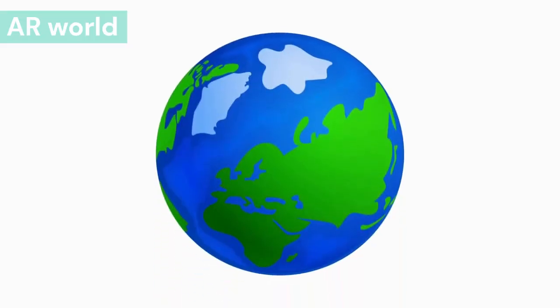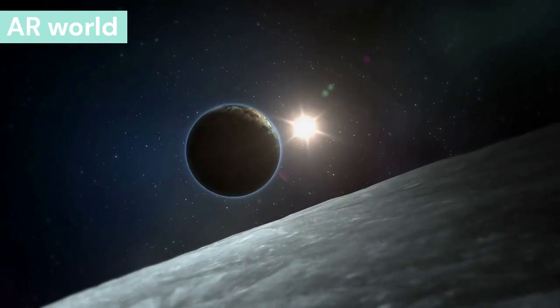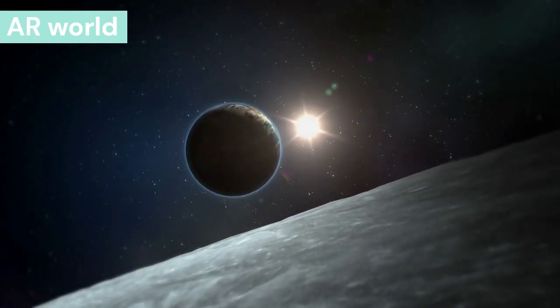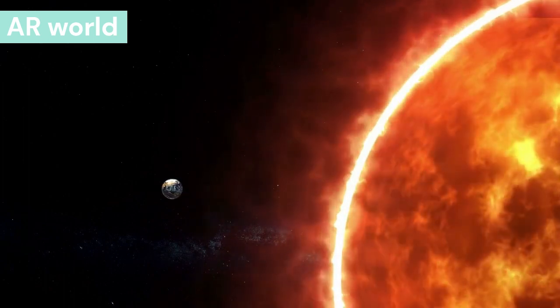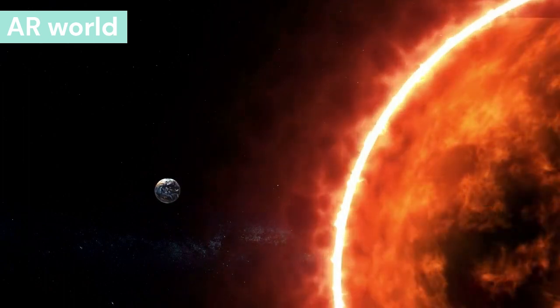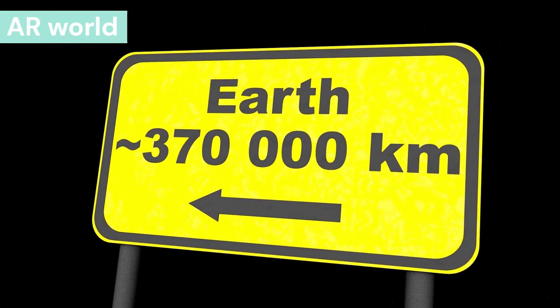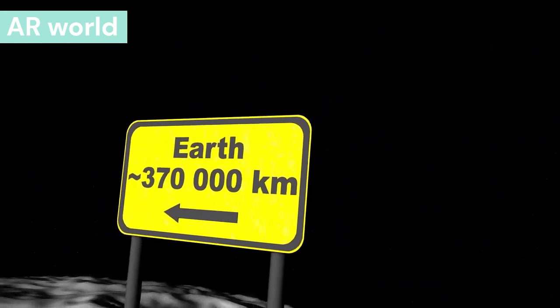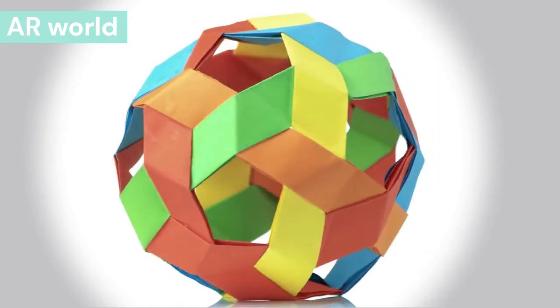Earth has a central core, a rocky metal layer, and a solid crust. Earth's radius is about 6,371 kilometers, and on the basis of size it is the fifth largest body in the solar system. The Earth is located at a distance of about 150 million kilometers from the Sun — a distance named the astronomical unit. It takes about 8.3 minutes for sunlight to reach the Earth.